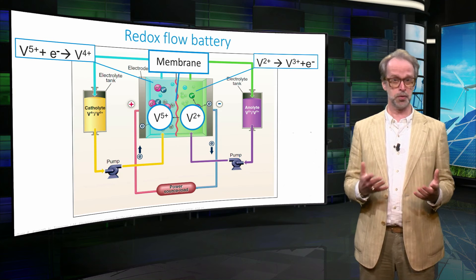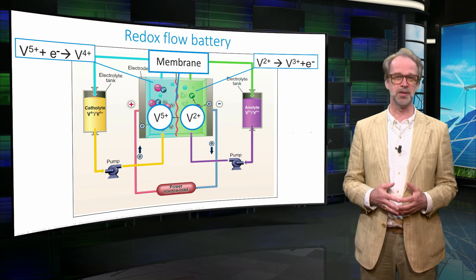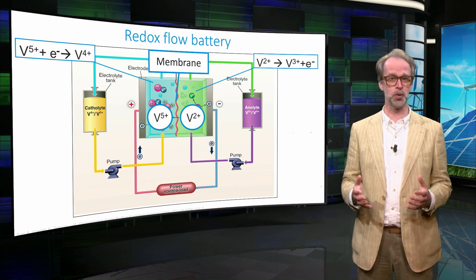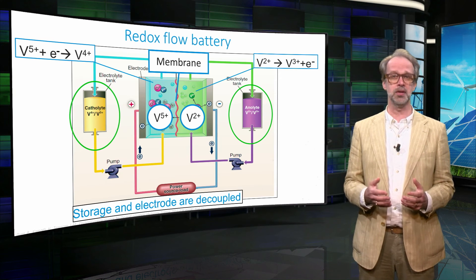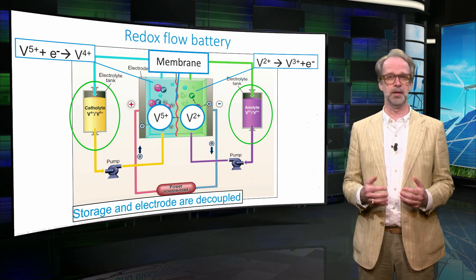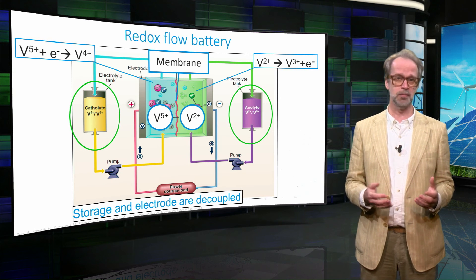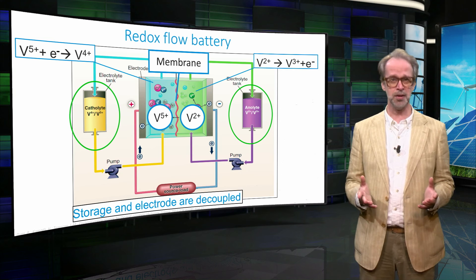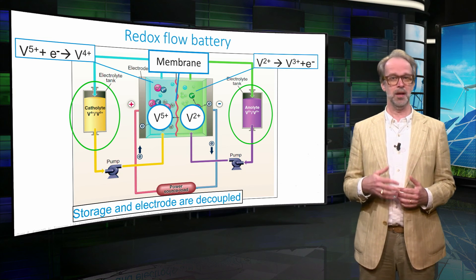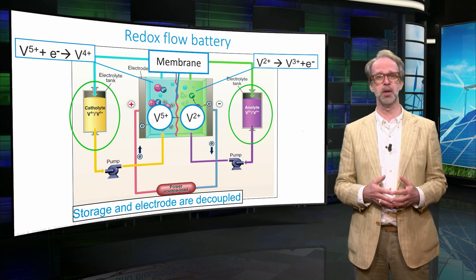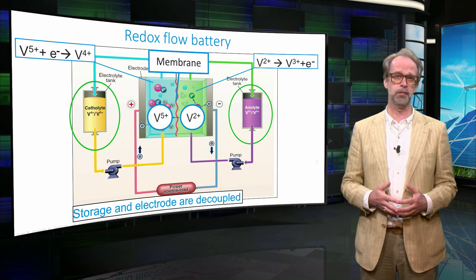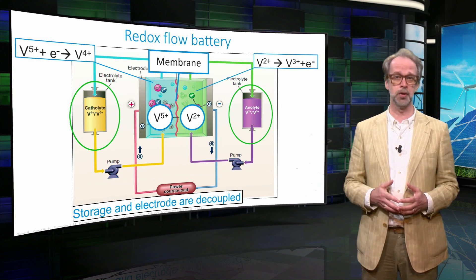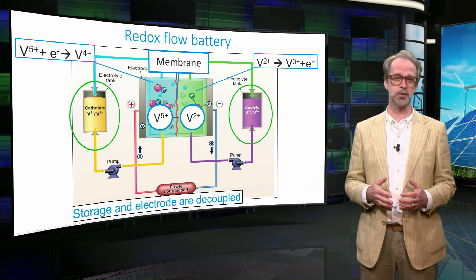The electrolyte is the storage medium and can be separated from the electrodes and stored in separate vessels. Thus, the energy storage is decoupled from the power. The electrode reactions determine the power of the battery, but the amount of liquid determines how much energy the battery can store. In general, this makes it easier to store large amounts of energy. However, the energy density of the liquid is very poor, resulting in a very large storage footprint. Nevertheless, several plants around the world are running, demonstrating over 14,000 charging cycles.